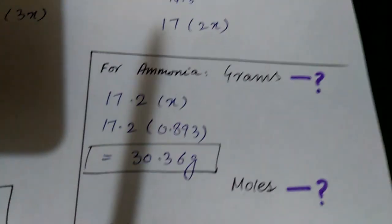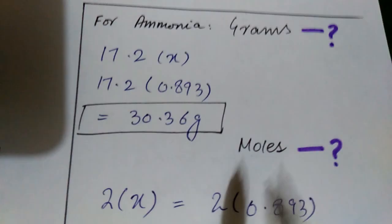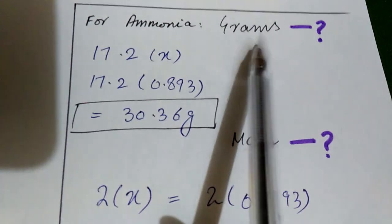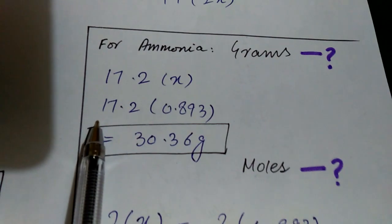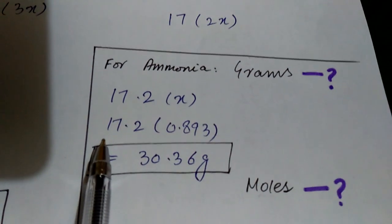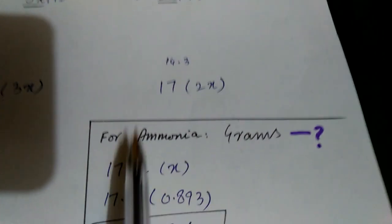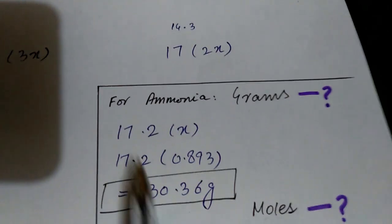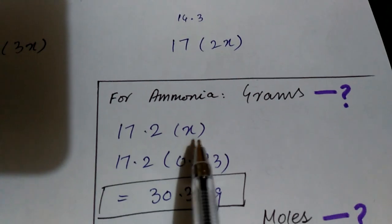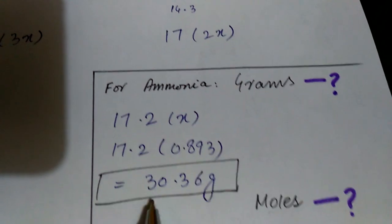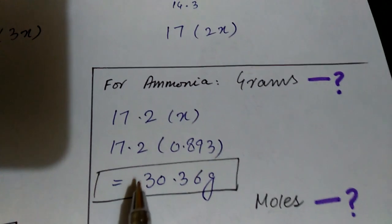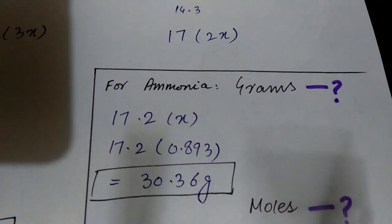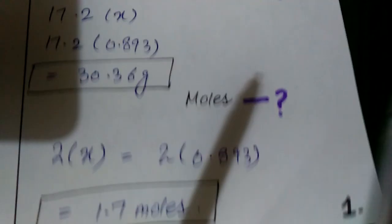Either they have asked for grams or moles, we can find it out. If they have asked how many grams of ammonia are formed, for ammonia the molecular mass is 17 and the coefficient is 2, so we write 17 times 2x. We put in the value of x (the magic number) and we get 30.36 grams.